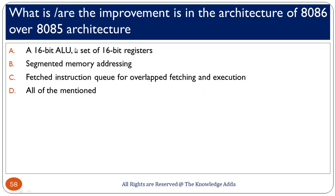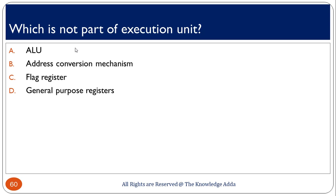What are the improvements in the 8086 architecture over 8085? The 8085 has an 8-bit ALU but the 8086 has a 16-bit ALU. The 8085 has 8-bit registers while the 8086 has 16-bit registers. There is no concept of segmented memory in the 8085 but there is in the 8086, and there is no concept of a queue in the 8085 but the 8086 has one. These points make the 8086 different from the 8085. The address conversion mechanism is not part of the Execution Unit — the EU contains the ALU, flag register, and general purpose registers.